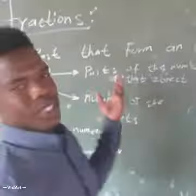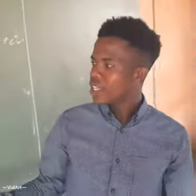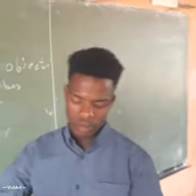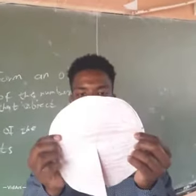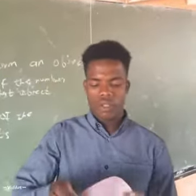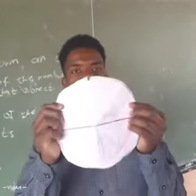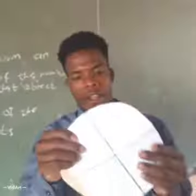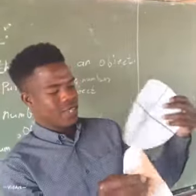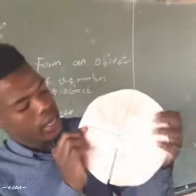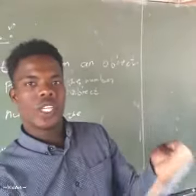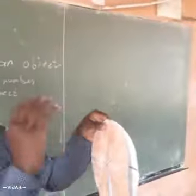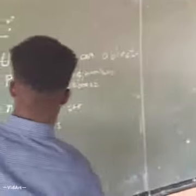A person can ask how we get the numerator and denominator. When we deal with fractions, let's take a circle as an example. We can have a full circle, then divide it into half, then into a quarter, then into an eighth. Remember, we're dividing that circle into equal parts, and we can keep dividing it more and more.